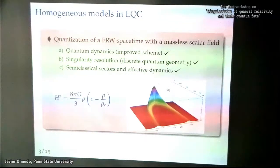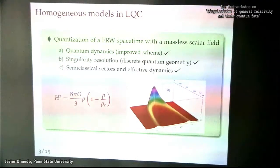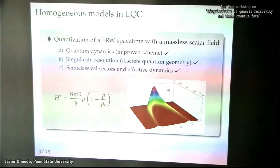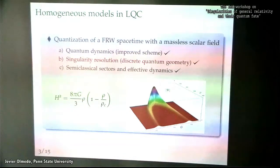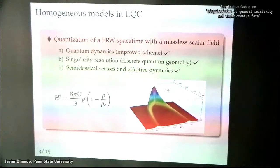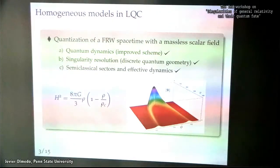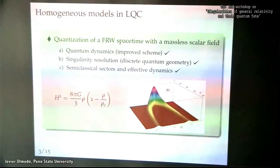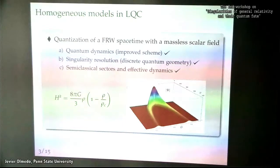One of the models studied in most detail in loop quantum cosmology is a flat Friedmann-Robertson-Walker spacetime coupled to a massless scalar field. If you choose the scalar field as a physical clock, it is possible to solve the quantum dynamics of the system. We know that singularities are resolved in this model in a very precise sense: you can start with a semi-classical state picked on a given classical geometry, evolve back in time, and this state will not reach the singularity but will actually bounce. We can also identify semi-classical sectors and deduce effective dynamics — for instance, the modified FRW equation — where quantum gravity effects become important when the energy density is of the order of the Planck energy density.